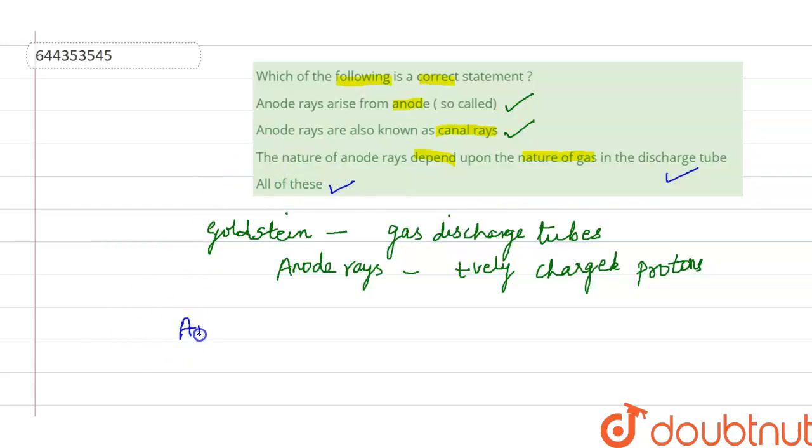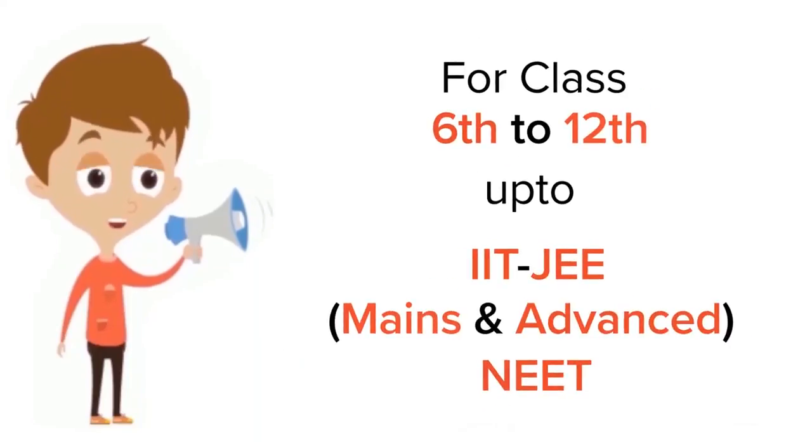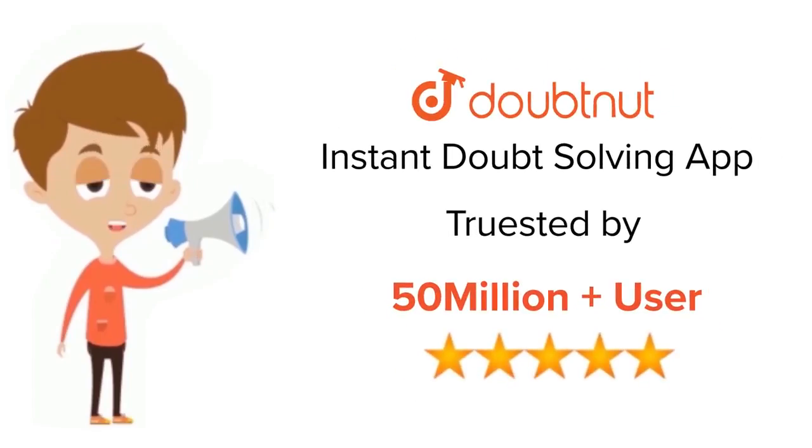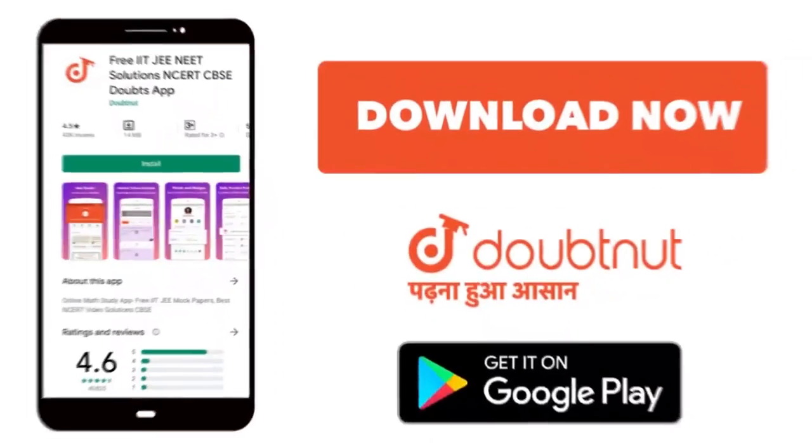So the answer is all of these, all the options are correct. For class 6 to 12, IIT JEE and NEET level, trusted by more than 5 crore students. Download Doubtnut app today.